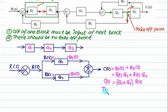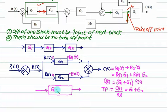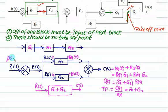So the transfer function — which is output upon input — equals G1 plus G2. That means the two blocks will vanish and we get a new single block whose transfer function value is G1 plus G2, with input R(S) on this side and output C(S) on this side. Such a type of arrangement is called a parallel arrangement.